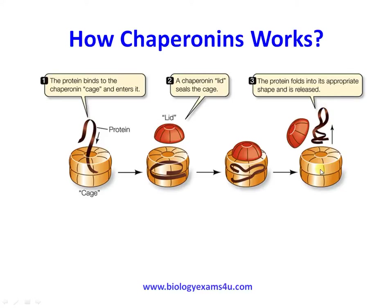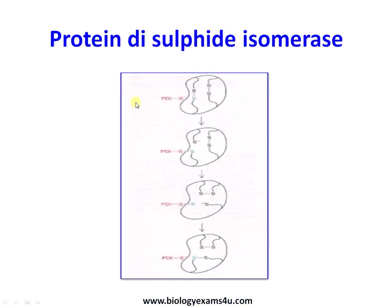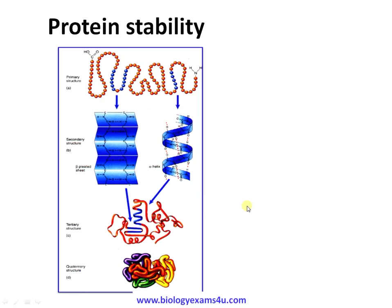Prolyl cis-trans isomerase is an enzyme involved in the conversion of trans peptide bonds to cis configuration at proline residues. Protein disulfide isomerase (PDI) is involved in disulfide bond shuffling — disulfide bonds formed at different stages are reshuffled before the protein reaches its fully functional conformation.